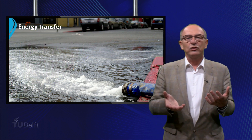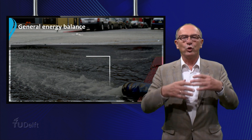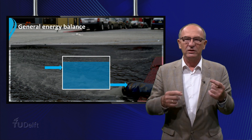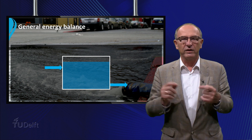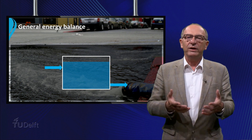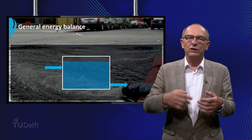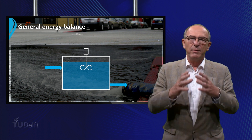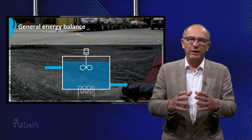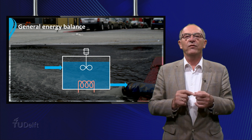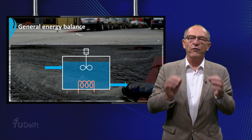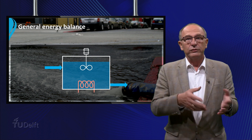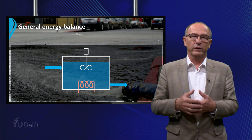We will now set up a general energy balance of a continuous process where a fluid enters and leaves the vessel. The liquid in the vessel is well mixed with a stirrer and is kept at a constant temperature by means of a heating element. This type of vessel is often found in the process industry where raw materials are converted into consumer products.